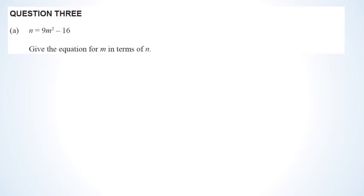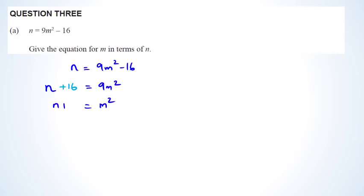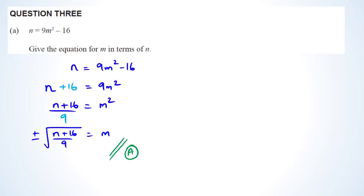Question 3: rearrange to get M by itself. Starting with N = 9M² − 16, add 16 to both sides: N + 16 = 9M². Dividing by 9: M² = (N + 16)/9. Therefore M = ±√((N + 16)/9). Note: when you square root a number, you should include plus or minus. However, forgetting the plus or minus in this question still gets you an achieved.